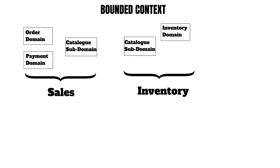For example, in sales the catalog subdomain contains details specific to orders — for example, in a particular order how much quantity has been ordered and at what price. In inventory, it contains details specific to inventory — for example, description, quantity available to be sold, and its price. These are the kinds of information it holds in each context.